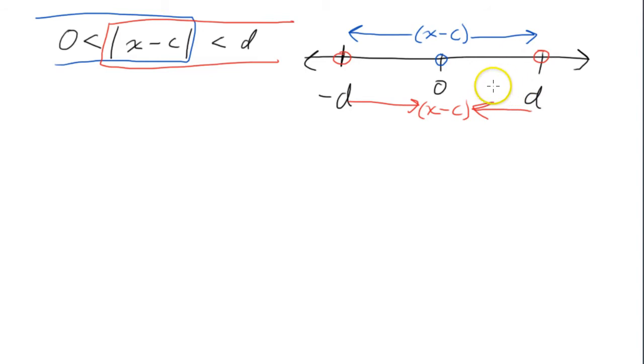So that gives us two little parts here. It says that we have this part where the quantity x minus c has to be between negative d and 0. So let's write that. negative d is less than the quantity x minus c is less than 0.